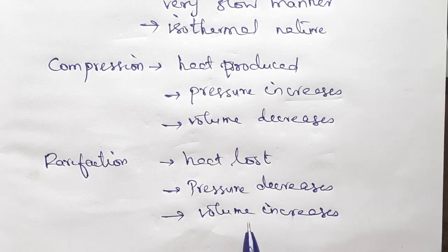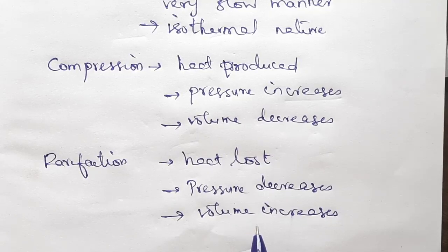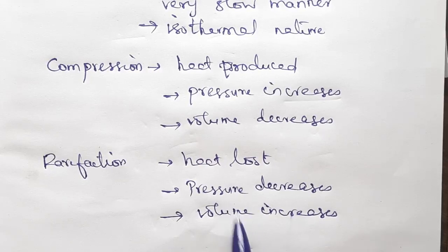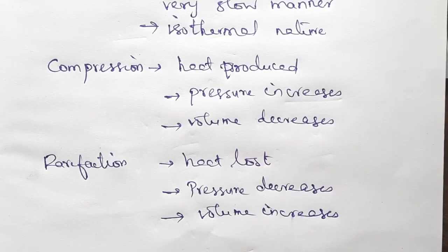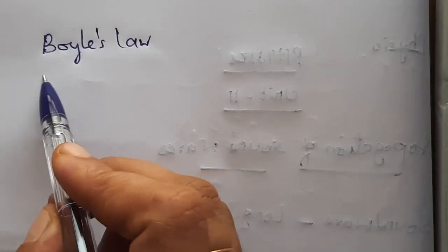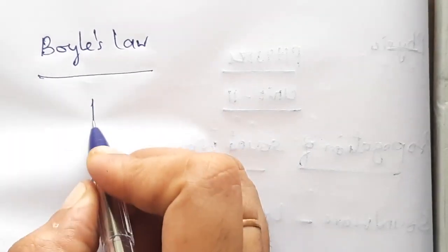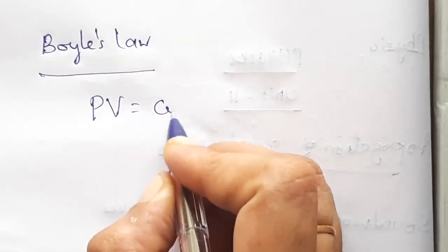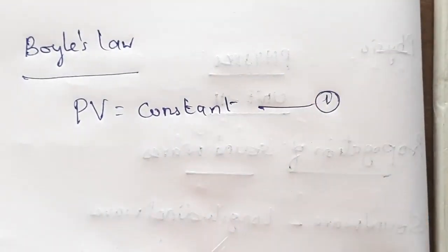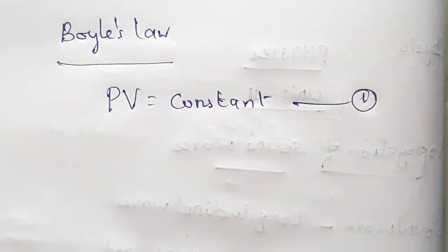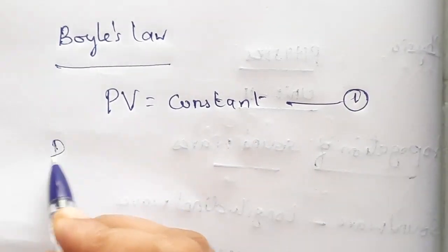For this isothermal condition, we can substitute the ideal gas equation. The changes in pressure and volume will obey Boyle's law. So the ideal gas equation gives us Boyle's law as PV = constant. Now let us find the speed of sound. For finding the speed of sound, we have to differentiate this equation.